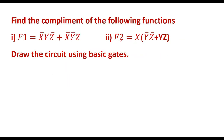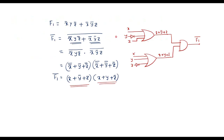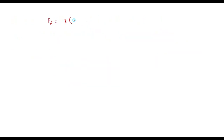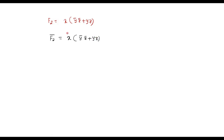Now let me consider the second function. f2 is equal to x times (ȳz̄ plus yz). Let me take the complement on both sides. So I can write f2 bar is equal to the complement of x times (ȳz̄ plus yz).